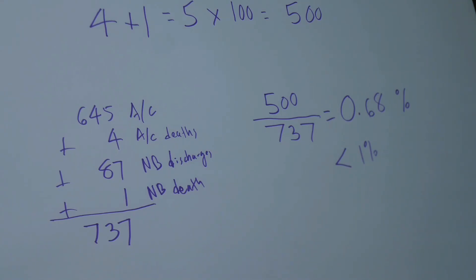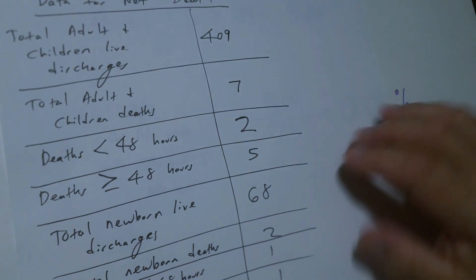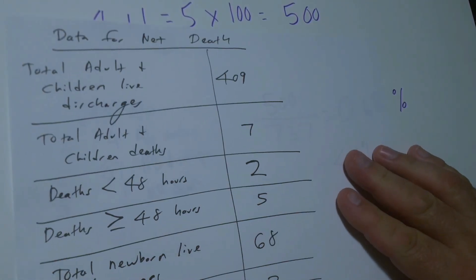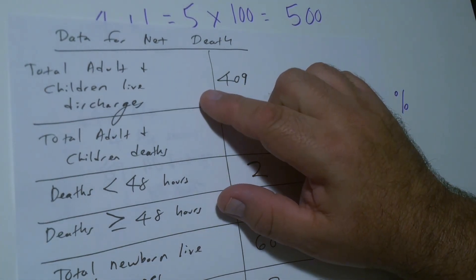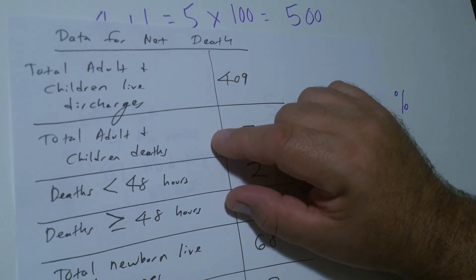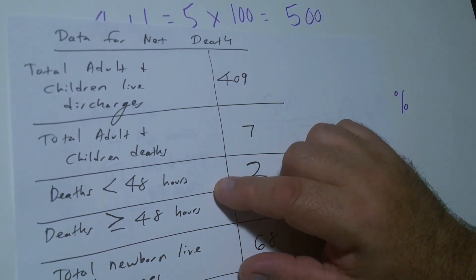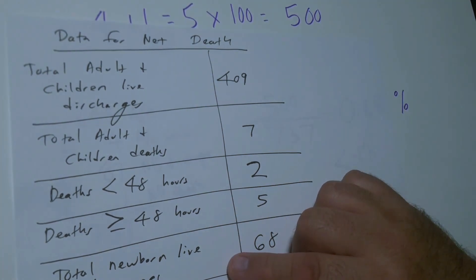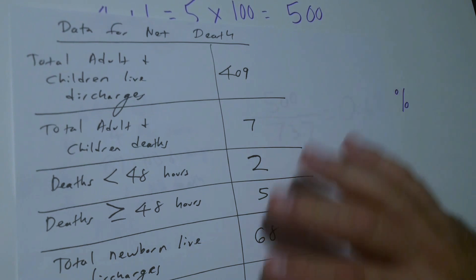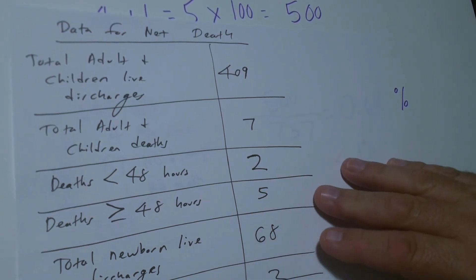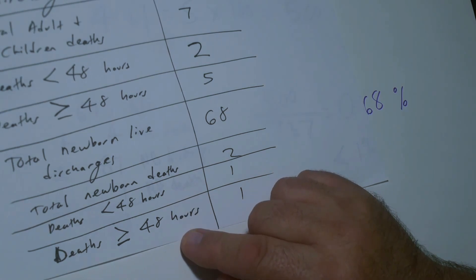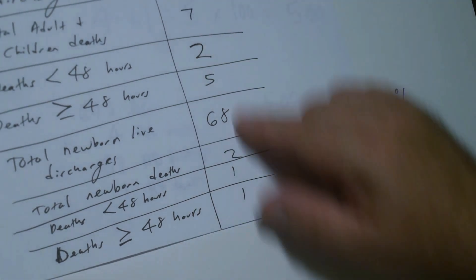Now for our little bonus, we're going to calculate the net death rate using this data. We've got adult and children live discharges, adult and children deaths, deaths less than 48 hours, deaths greater than or equal to 48 hours, total newborn live discharges, total newborn deaths, newborn deaths less than 48 hours, and deaths greater than or equal to 48 hours.